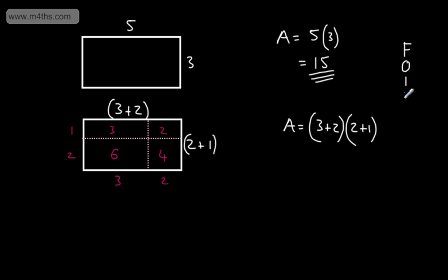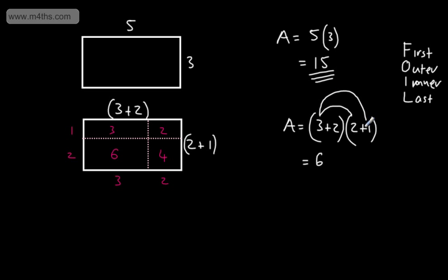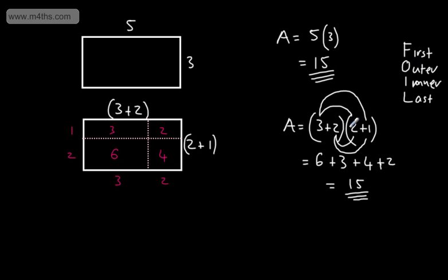One way to do this is called FOIL — First, Outer, Inner, Last. You don't have to use it, but it's an option. For (3+2)(2+1): First gives 3 times 2 = 6, Outer gives 3 times 1 = 3, Inner gives 2 times 2 = 4, Last gives 2 times 1 = 2. Adding up gives 15. As long as you multiply each term by one another, the method is flexible.